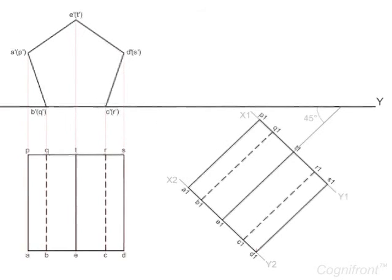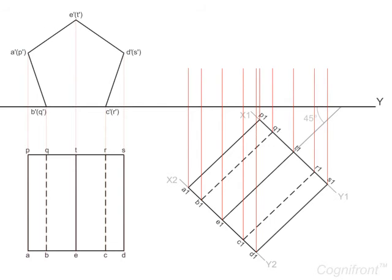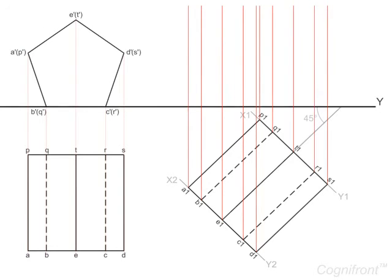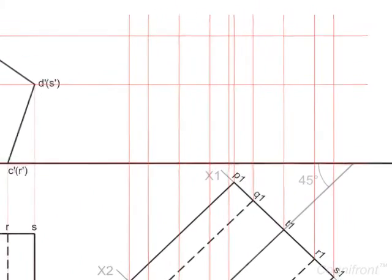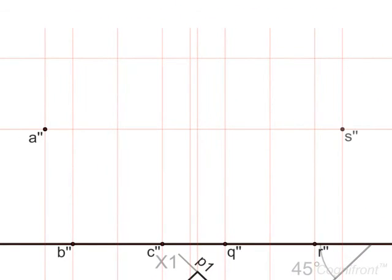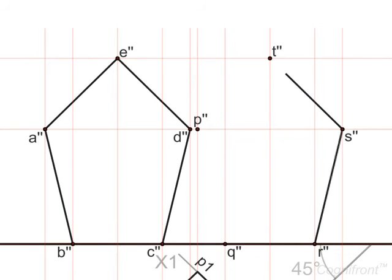Then, project all points from this top view above line XY. These projectors will intersect the horizontal projectors drawn from the existing front view. Mark the intersecting points and complete front view in this altered position.